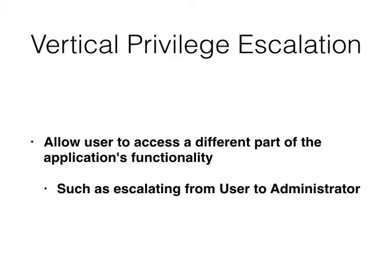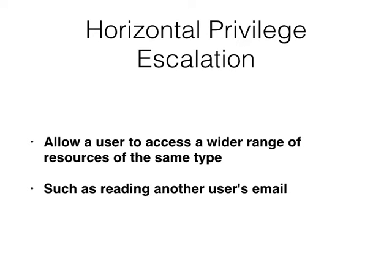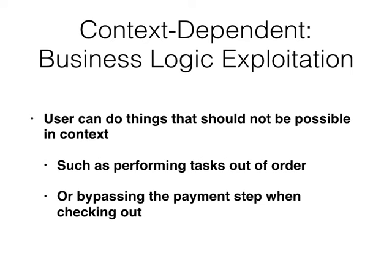Typical vulnerabilities include vertical privilege escalation — this means you can increase your privilege from a normal user up to administrator. Horizontal escalation means you can become somebody else, like getting another student's account if you're a student. Then there's business logic exploitation, where you can do things you should not be able to do in context, like performing steps out of order or skipping a step like skipping the payment step when ordering something and getting the product anyway.